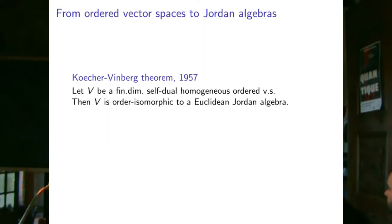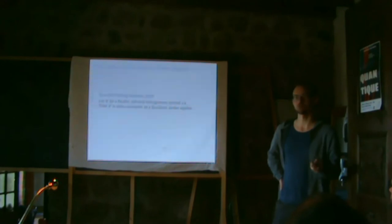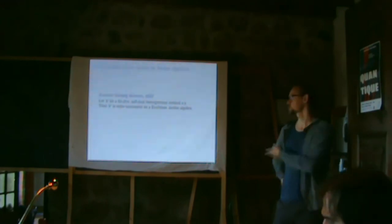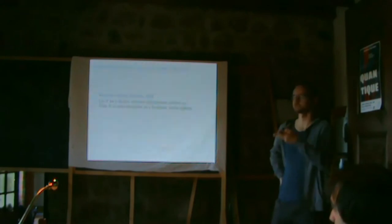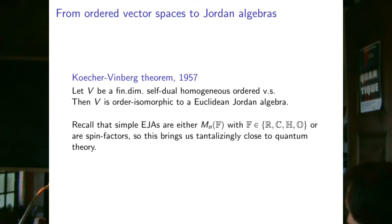Question: what is Euclidean again? A Euclidean Jordan algebra has an inner product such that the left multiplication operator L_a is symmetric with respect to that inner product. This theorem is really useful — many people interested in homogeneous self-dual cones work with Jordan algebras because of it, for applications in linear programming and cone programming.